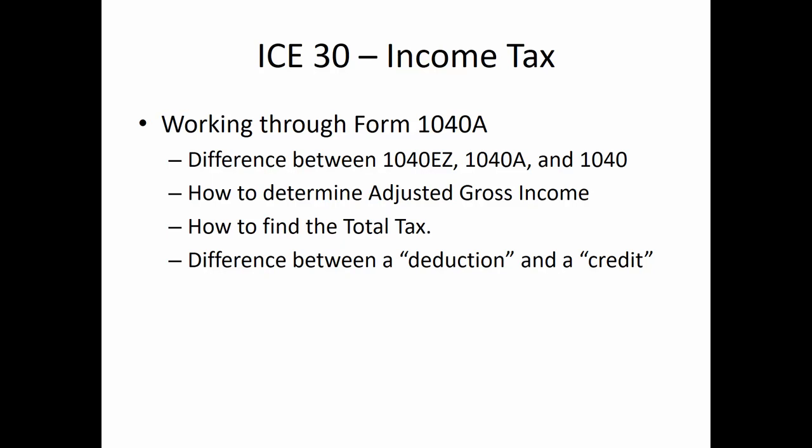The main highlights I'd like you to walk away with: number one, how to determine the AGI — the adjusted gross income — which affects eligibility for many services and credits. I'll show you the technique to calculate your total tax by looking it up in a tax table. And another key item: most people, even adults who file taxes every year, don't know the difference between a deduction and a credit. That's something I want you to understand.